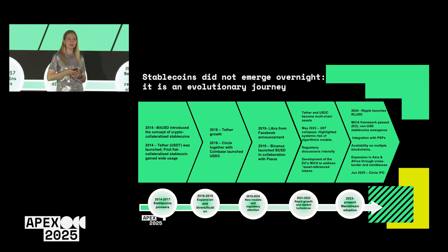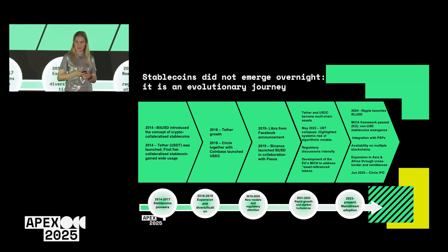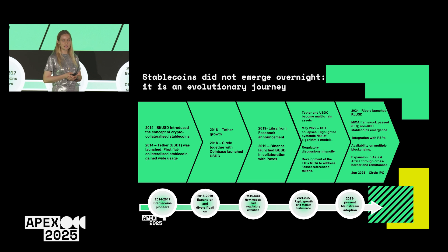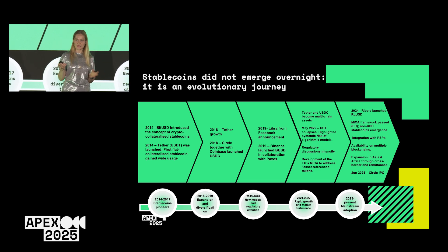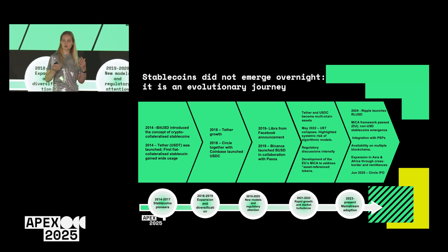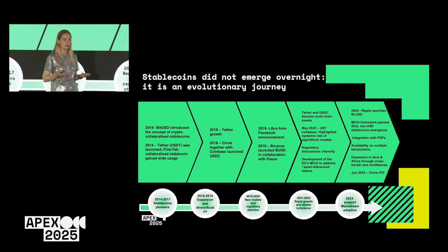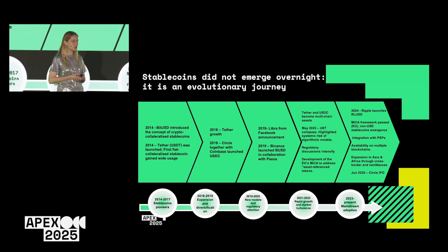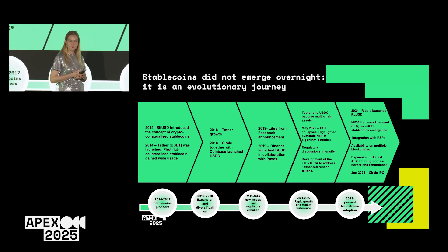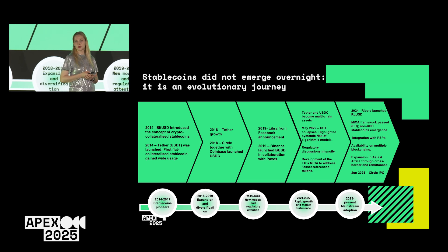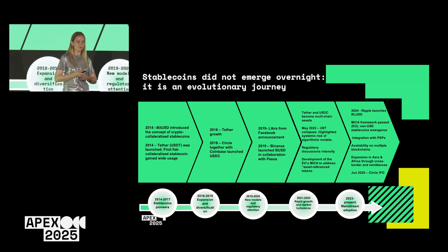Another interesting year is 2019, when Facebook — now Meta — announced their global stablecoin product, which attracted lots of attention from central banks and gave that push for central banks to start work on their own central bank digital currencies. And of course the current stage is slowly moving toward mainstream adoption, driven by new use cases, new players entering the space, and the development of regulatory frameworks in different countries.